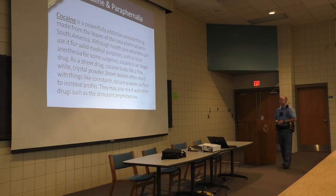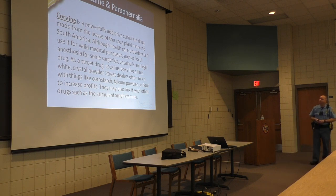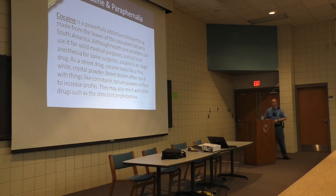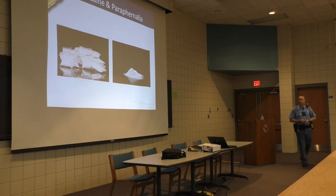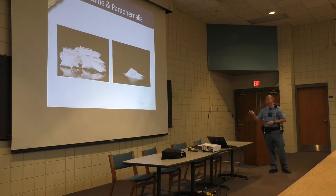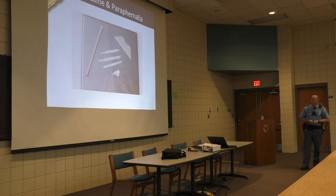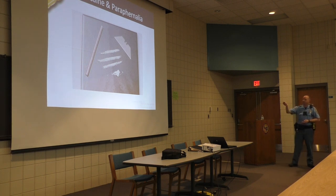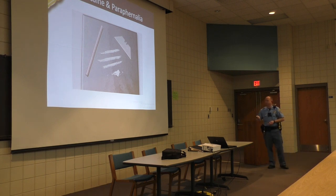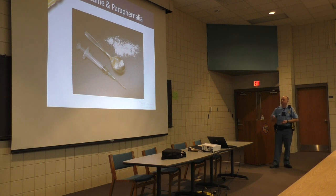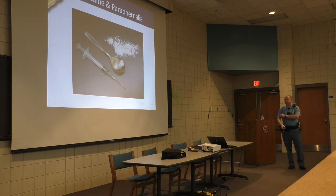Cocaine is a white powdery substance. A lot of times you'll find it mixed together with methamphetamines. You might find it in a small bag similar to crystal methamphetamine packaging. Cocaine is usually snorted — they'll have a mirror, lay out some lines, and snort it up with a straw. It can also be injected: heat the spoon, turn it into a liquid, put it in a syringe, and inject it.